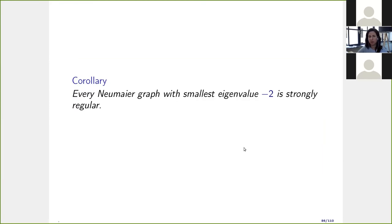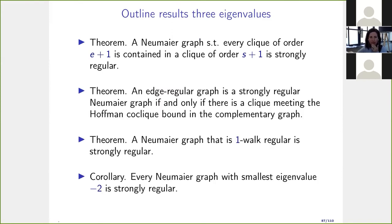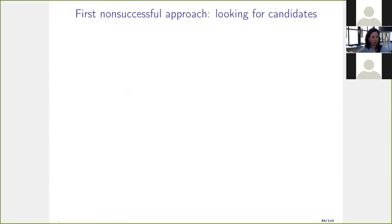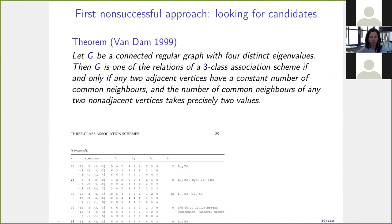A corollary: it is not possible to construct Neumeier graphs as a relation graph of a symmetric association scheme that does not come from a strongly regular graph. This led to an unsuccessful approach for finding four-eigenvalue candidates via Edwin's thesis on three-class association schemes — we searched for a Neumeier graph with exactly four distinct eigenvalues among those graphs, but found none. That failure is now well understood.